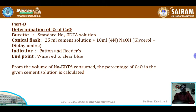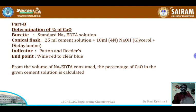As we saw in the total hardness experiment, both calcium and magnesium react with Na₂EDTA. Here we want to estimate only the calcium oxide content, not magnesium. If we tried to remove magnesium using a precipitating agent, calcium would also be removed. Therefore, 4N NaOH is added to mask magnesium ions by precipitating them as magnesium hydroxide, while also maintaining pH 12 to 14. Glycerol and diethylamine are also added to get a sharp endpoint.